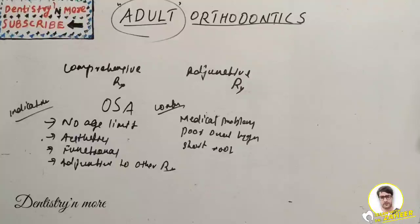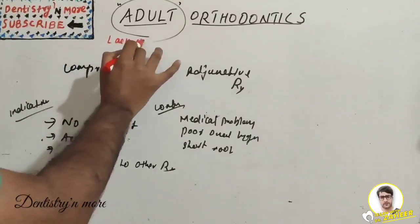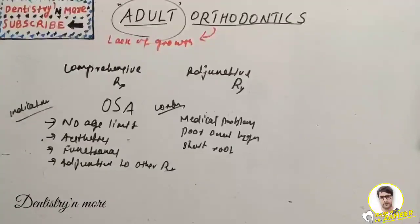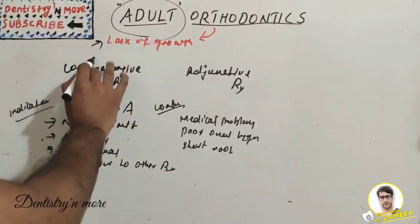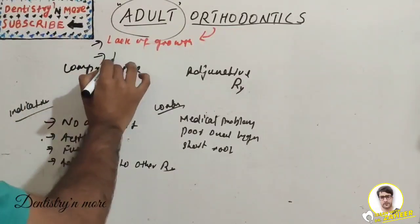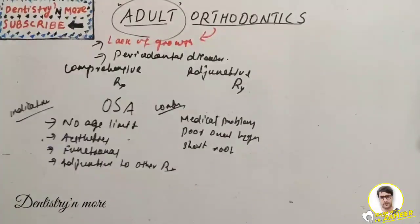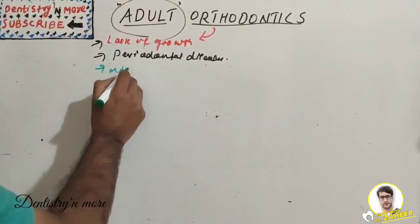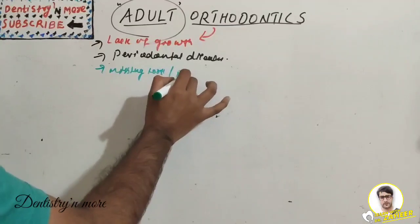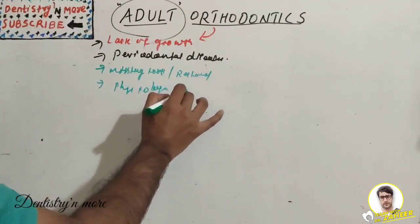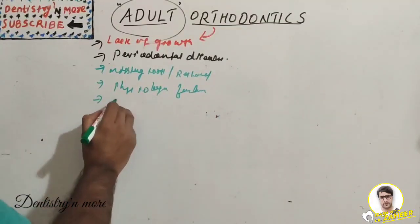The problems adult patients face include: first, lack of growth — since growth cessation has occurred, there is no bone remodeling or resorption. Second, periodontal diseases. Third, missing or heavily restored teeth. Fourth, physiological factors affecting tooth movement. Fifth, adult motivation and attitude.